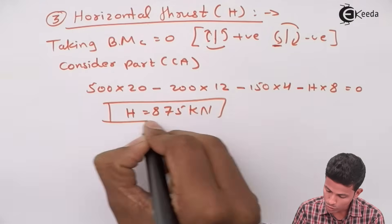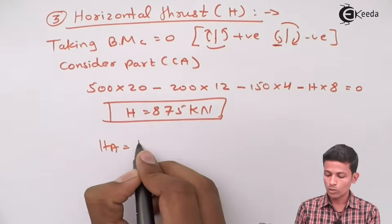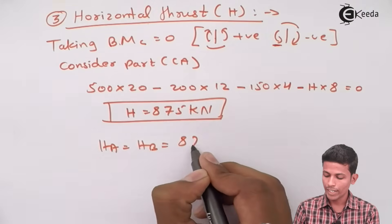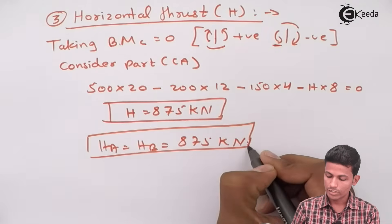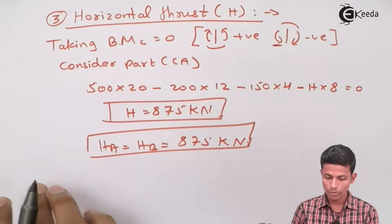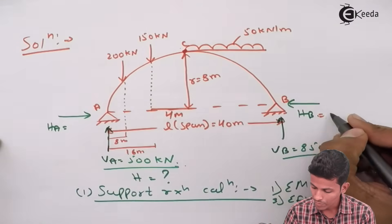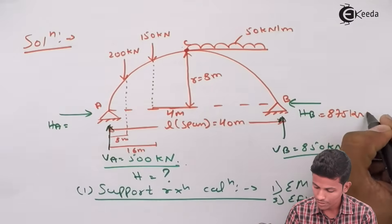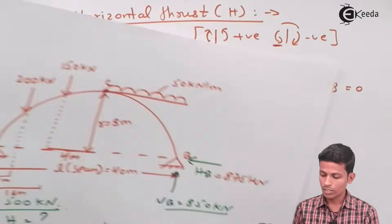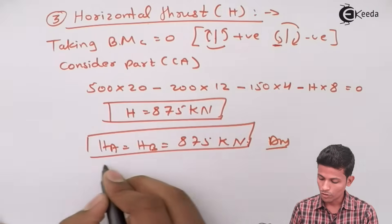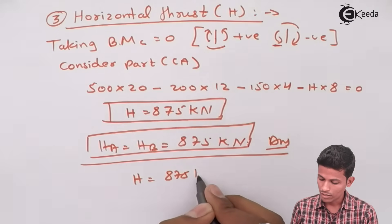As we know, in this chapter both horizontal reactions are equal: HA = HB = 875 kN. Since H is always inward, both HA and HB equal 875 kN. This is the final answer: horizontal thrust H = 875 kN.